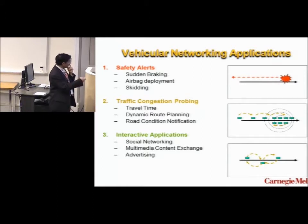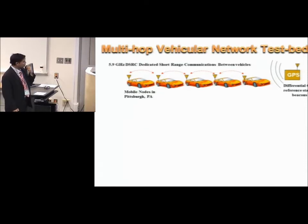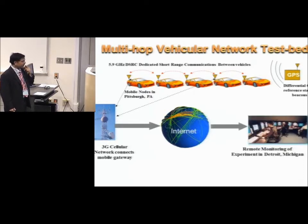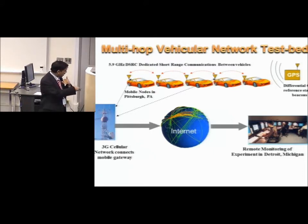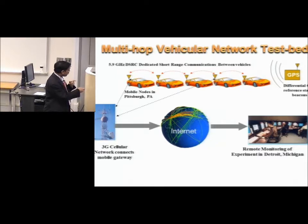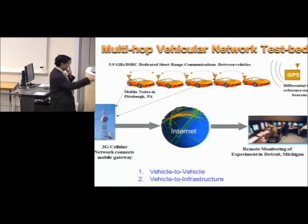There are safety applications, traffic management applications, and data sharing applications. What we built was a multi-hop networking system between cars on the roads. Some cars have smartphones with 3G connectivity; they in turn can propagate information from the vehicle network to the internet and to any remote center — in this case, our GM colleagues in Detroit, Michigan. While our network of vehicles is running in Pittsburgh, our colleagues in Michigan can watch it remotely and even try to influence what is happening in Pittsburgh remotely — for example, faking a message from a vehicle sitting in Detroit sent to a car in Pittsburgh to test if information propagates correctly.